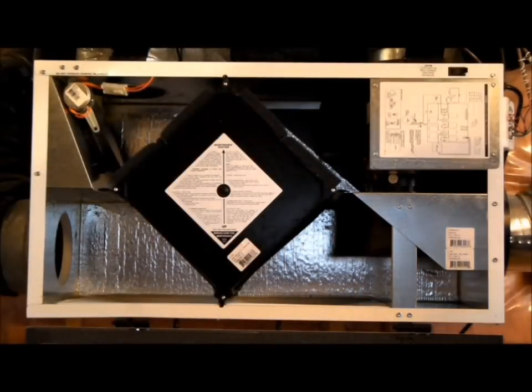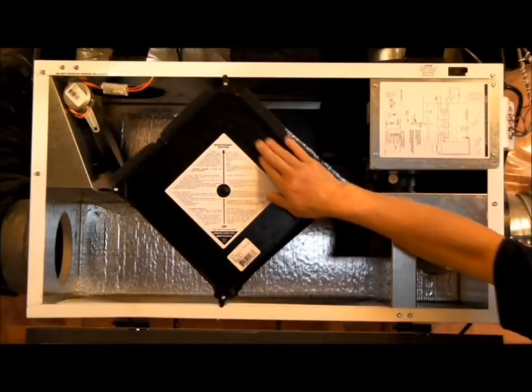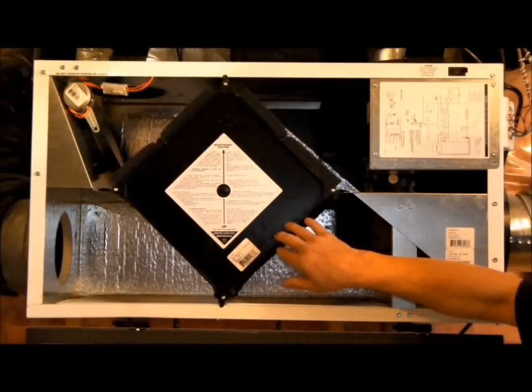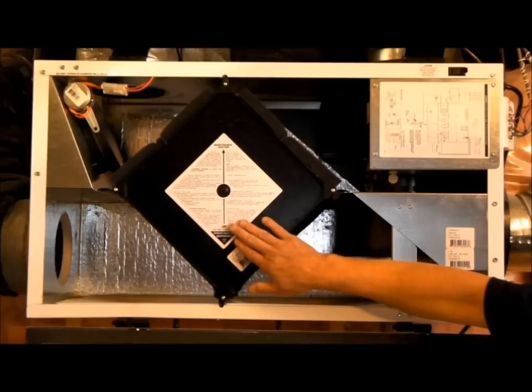In the maintenance routine of your HRV system, it is all written right here on the core itself. If you ever get confused on what to clean and when to clean it, all you need to do is open the door, and you can read it for yourself right here.